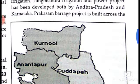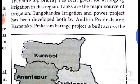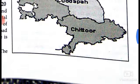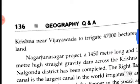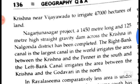Kurnool, Kadapa, Anantapur, Chittor, and Prakasam districts benefit from irrigation. The Prakasam Barrage project is built across the Krishna River near Vijayawada, irrigating 47,000 hectares of land. The Nagarjunasagar project has a 150-meter long and 120-meter high straight gravity dam from the Krishna River in Nalgonda district, which has been completed.